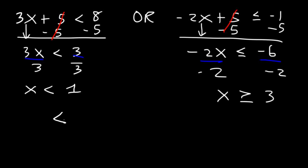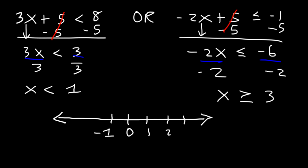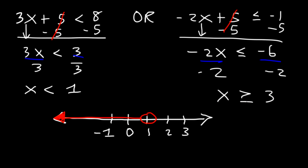Now let's plot the solution on a number line. Mark 0, negative 1, 1, 2, and 3. Since x is less than 1 but not equal to it, we use an open circle at 1 and shade towards the left. Since x is greater than or equal to 3, we use a closed circle at 3 and shade towards the right. That's how you graph the solution on a number line.